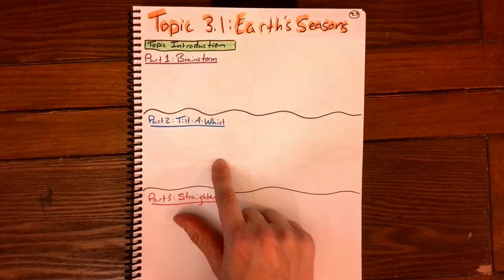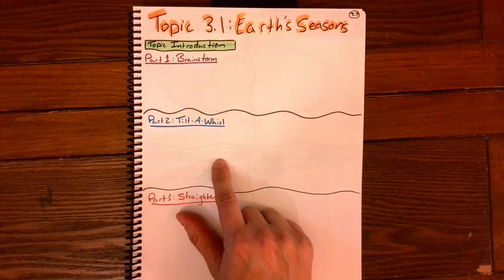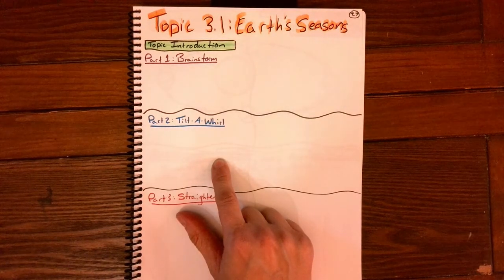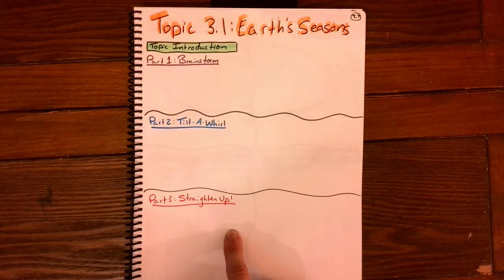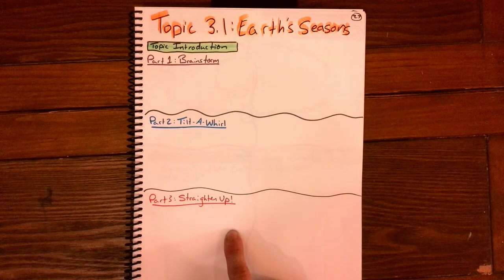Part two is called Tilt-A-Whirl. In Tilt-A-Whirl, we're going to look at the Earth's axis and its angle to determine what effect that might have on seasons. And then for part three, it's called Straighten Up. You'll be asked to predict what might happen to Earth's seasons if we did not have a tilted axis.